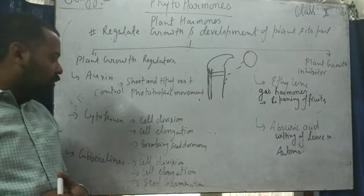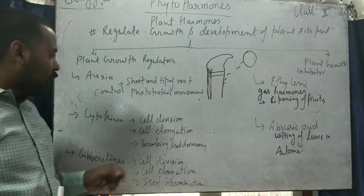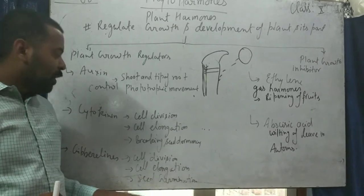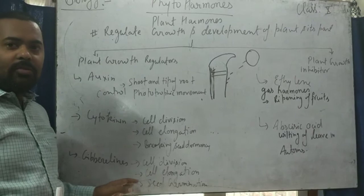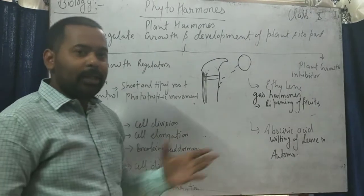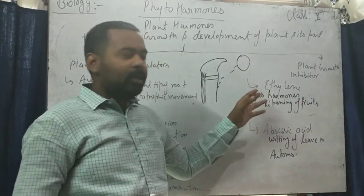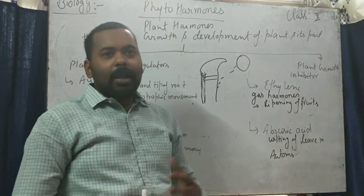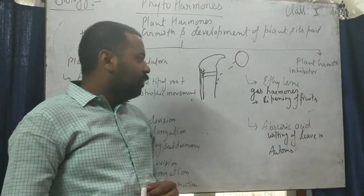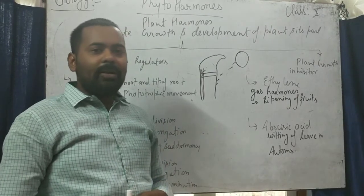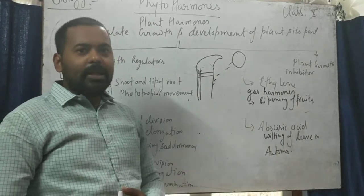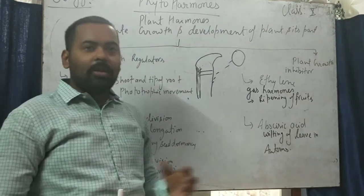The last plant growth regulator is gibberellins. Gibberellins also perform similar functions to cytokinin — it helps in cell division, cell elongation, and seed germination. In agriculture, farmers use gibberellins for seed treatment. Now moving to plant growth inhibitors: first is ethylene, a gaseous hormone which helps in ripening of fruit by producing excessive carbon dioxide, which changes the color of the fruit. The last one is abscisic acid, which helps in the belting (falling) of leaves in the autumn season.